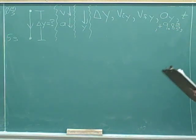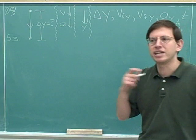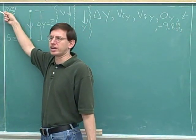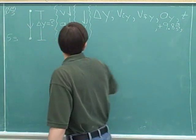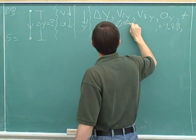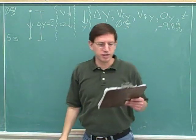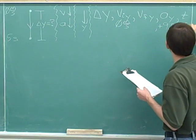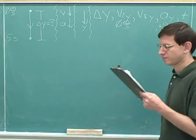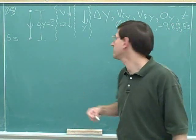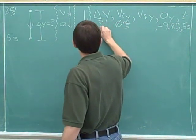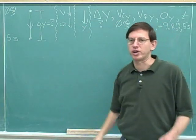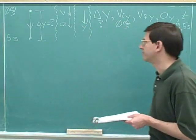Object is dropped from rest — that's some important hidden information. If it's dropped from rest, that tells us the initial velocity was zero meters per second. Make sure that you read carefully to get all that hidden information. After five seconds — that would be the time, five seconds. What is its displacement? When we see the word 'what,' we know that's the question. I hope you've gotten into the habit of always indicating the question with a question mark — that's a really useful problem-solving technique.